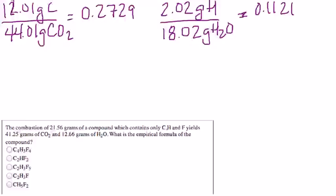So as you can see above here, I have the 12.01 grams of carbon over 44.01 grams of carbon dioxide. Every time will be 0.2729. So you can always use that number right there.